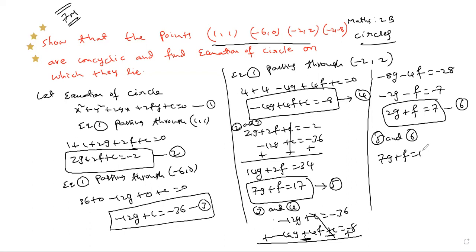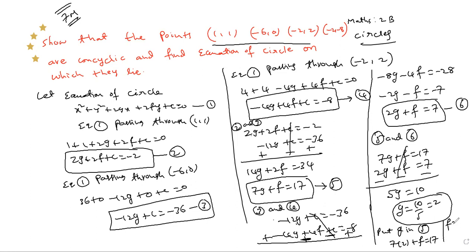From equation 5: 7g + f = 17, and equation 6: 2g + f = 7. Subtracting, f cancels: 7g - 2g = 5g, and 17 - 7 = 10. So g = 10/5 = 2. Substituting g = 2 into equation 5: 7(2) + f = 17, which gives f = 17 - 14 = 3.